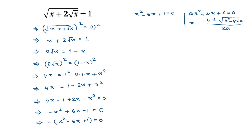Comparing to this equation, the value of a is equal to the coefficient of x squared, which is 1. And b is the coefficient of x, so this is negative 6. And c is equal to the constant term, so this is positive 1. Applying this formula, x is equal to negative b, which means negative of negative 6.